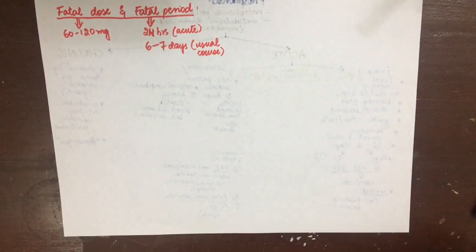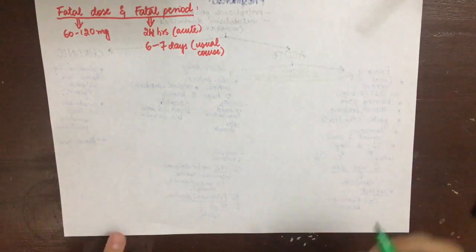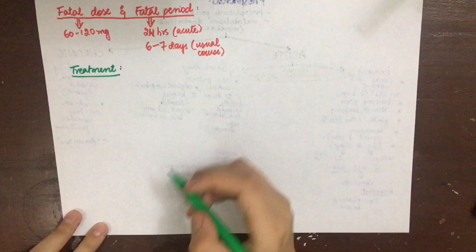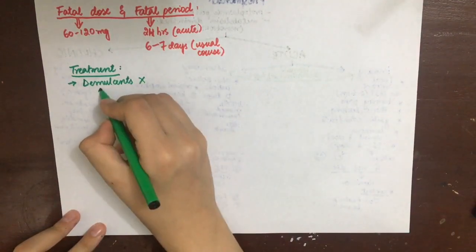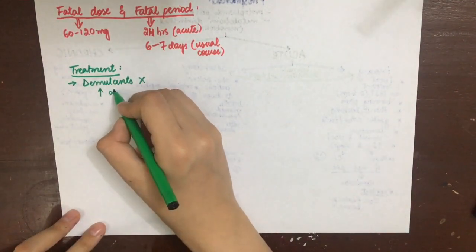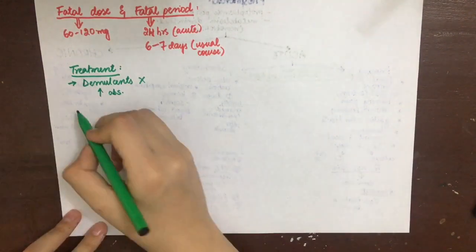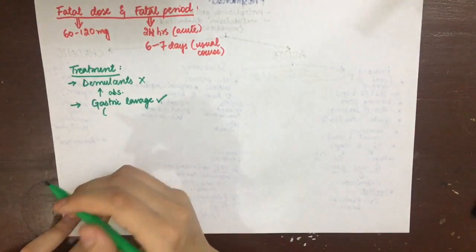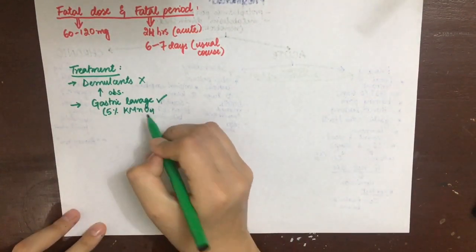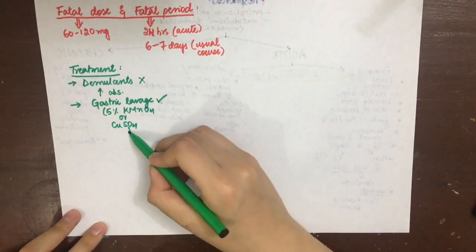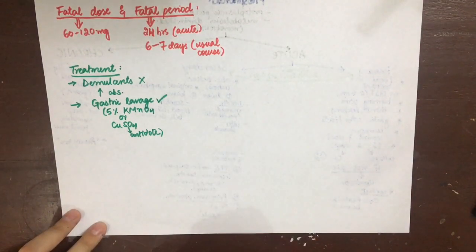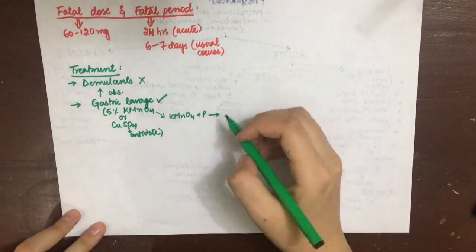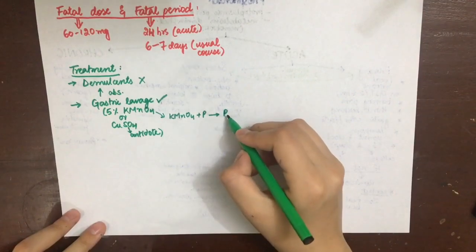For treatment of acute phosphorus poisoning, demulsants such as oil, fatty substances, and milk are contraindicated because they dissolve and promote further absorption of phosphorus. Gastric lavage with 5% KMnO4 or copper sulfate as an antidote should be done repeatedly till vomiting occurs and the phosphorus is expelled. KMnO4 is a chemical antidote which reacts with phosphorus to form harmless compounds such as phosphoric acid and phosphates.